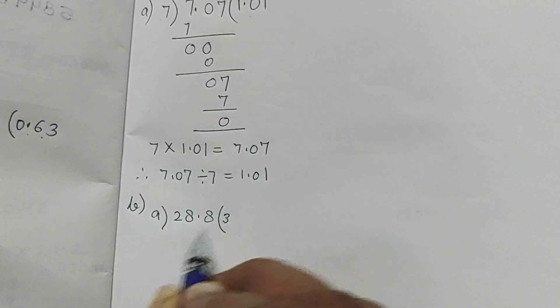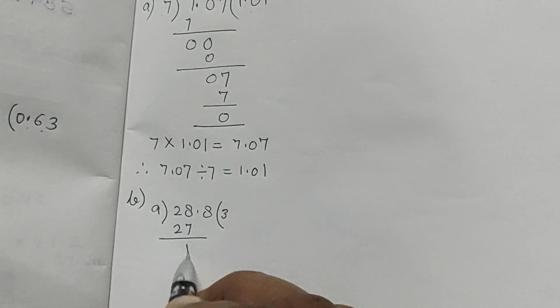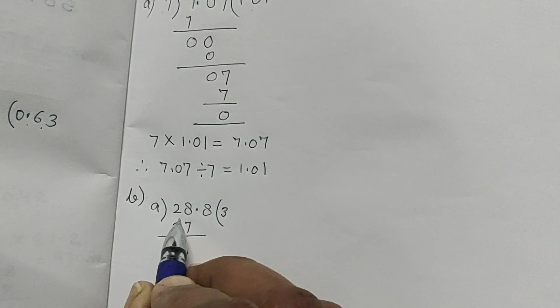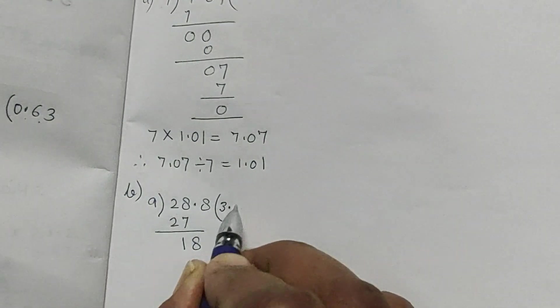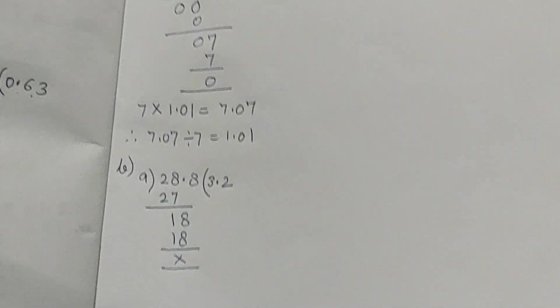So 9 into 3 is 27. 28 minus 27 is 1. This is a point, this is a point. So we will bring down 18. 9 into 2 is 18, and the division is complete.